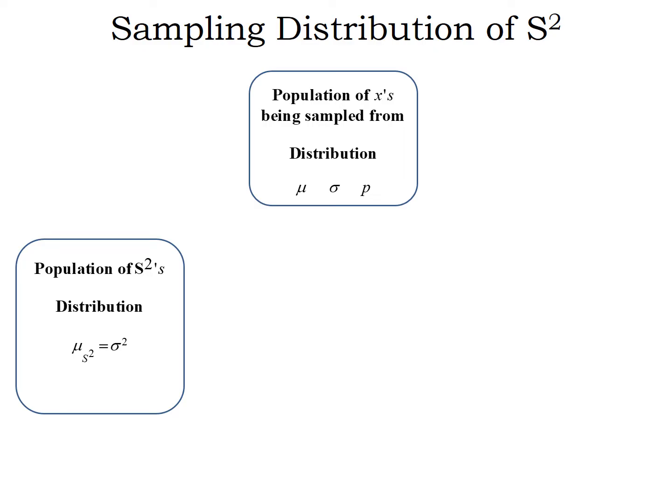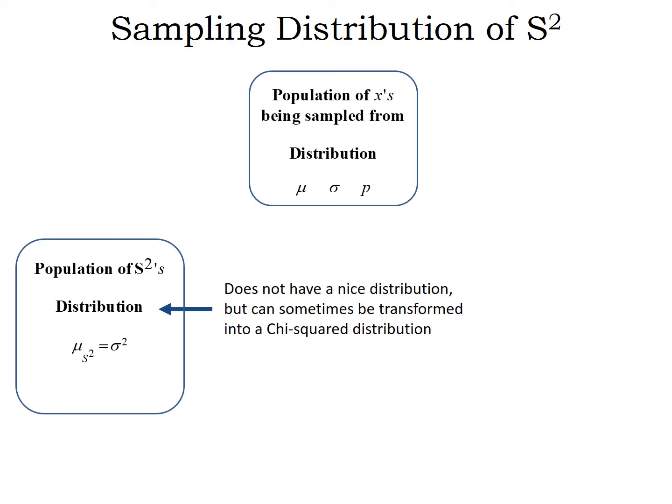s-squared is not nicely distributed. It doesn't matter what the population looks like that you're sampling from — you're not going to know the behavior of s-squared or equivalently the sample standard deviation s. s-squared just doesn't happen the same way. Every population you sample from, when that distribution changes, that impacts how s and s-squared behave.